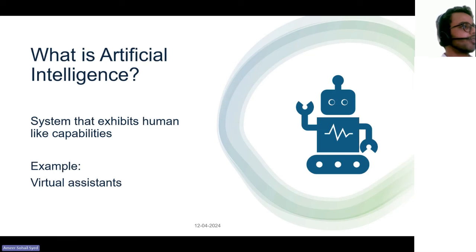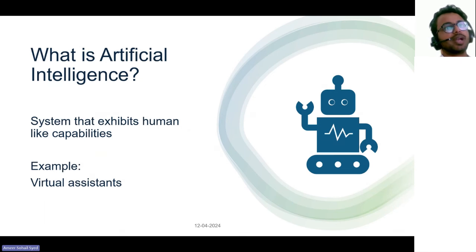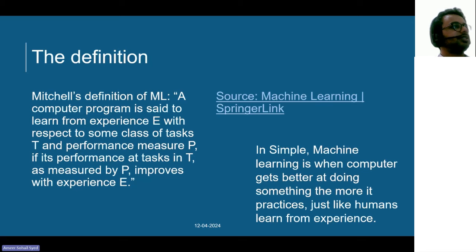One example of AI is virtual assistants — you have some physical device you interact with, and it comes back with some kind of response. That's one example. And within artificial intelligence, as I said, the subset is machine learning. As part of making this session a bit engaging, I want you to read through this slide for a minute and see if you can understand the definition.